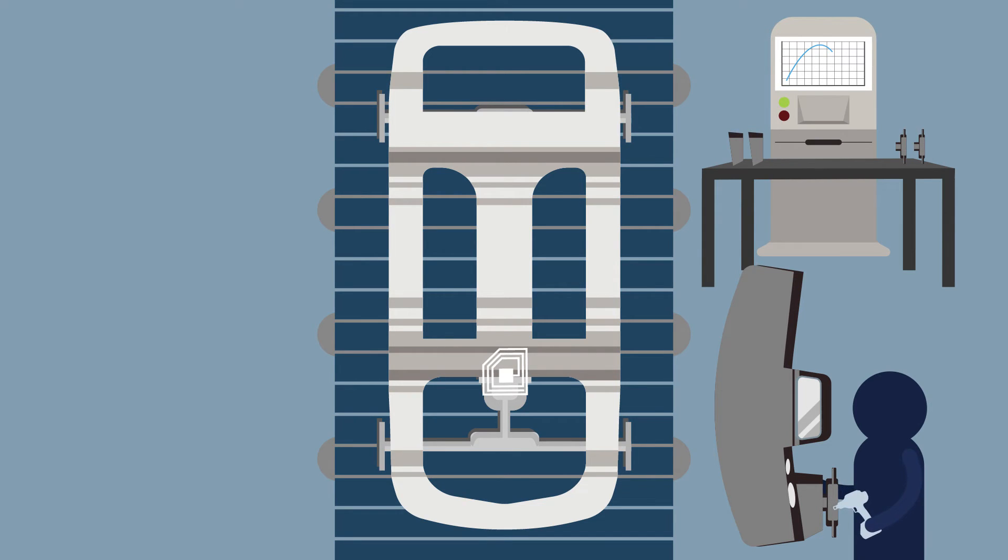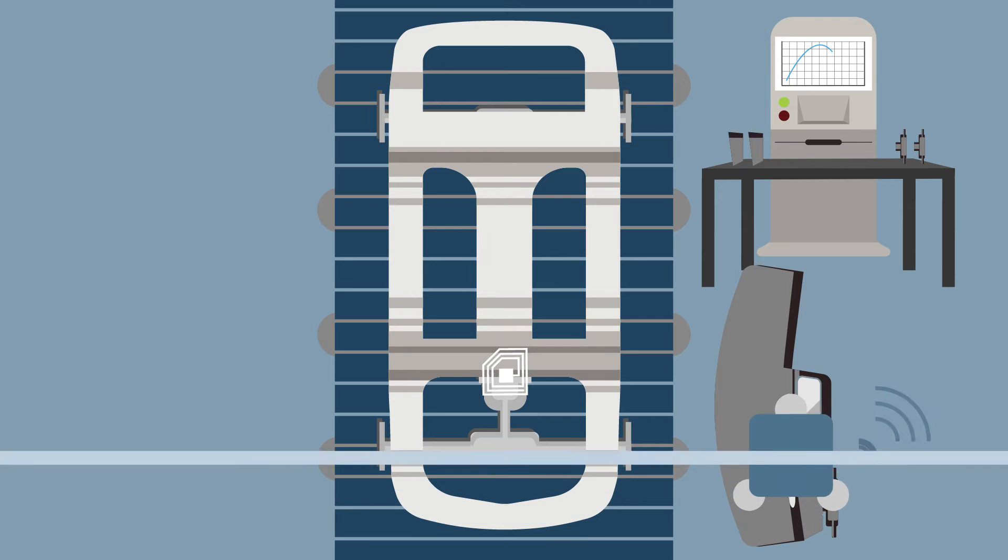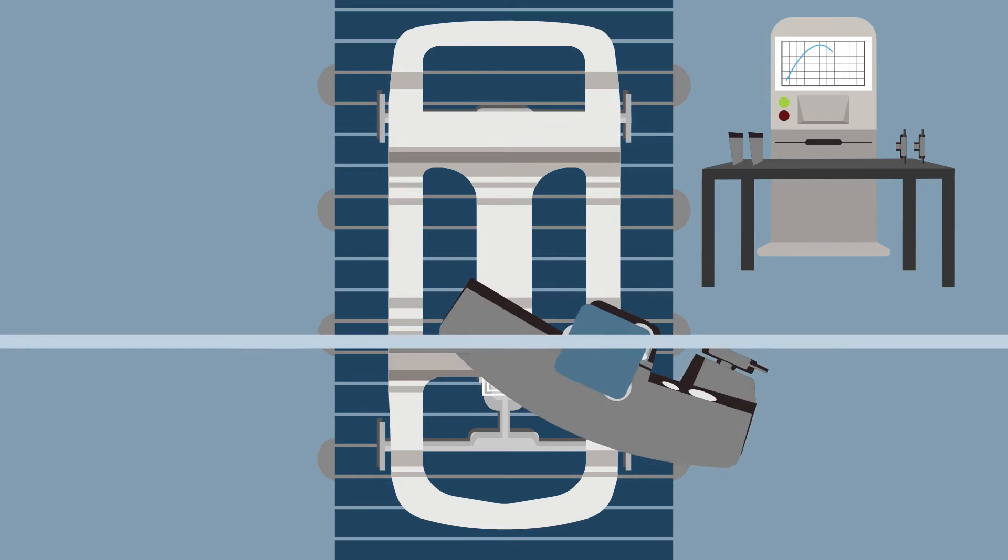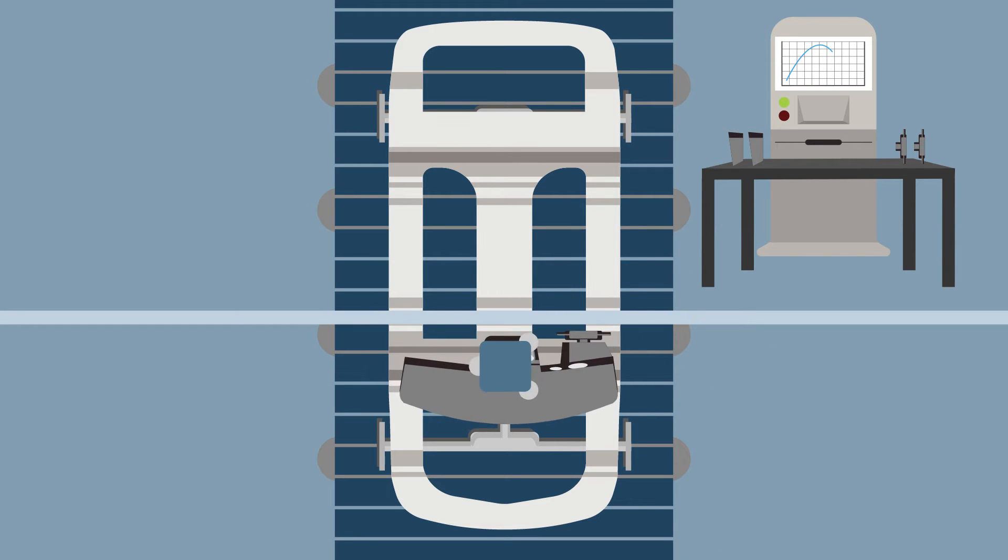Even handheld assembly tools have smart technology to connect man and machine better. The Nexo Nutrunner Tightening System has links to all relevant data. The Nexo determines the exact positioning of the screw automatically, making a wrong assembly impossible.